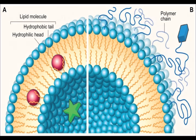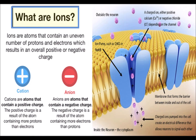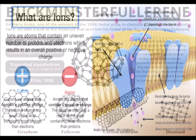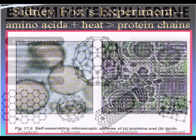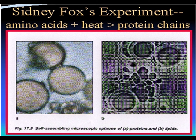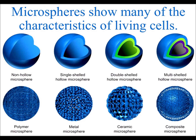Just by increasing microscopic variations of photon energy by heating graphite, 60 carbon atoms quickly form spheres. Microspheres are formed by variations in the temperature of amino acids, and microspheres show many of the characteristics of living cells.